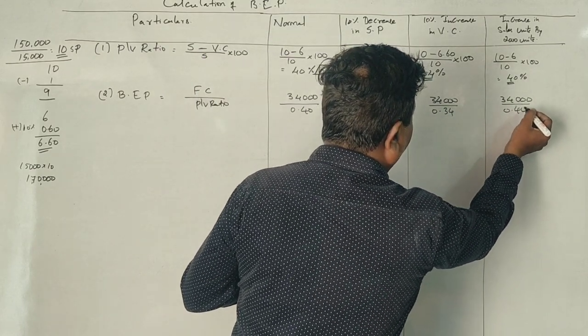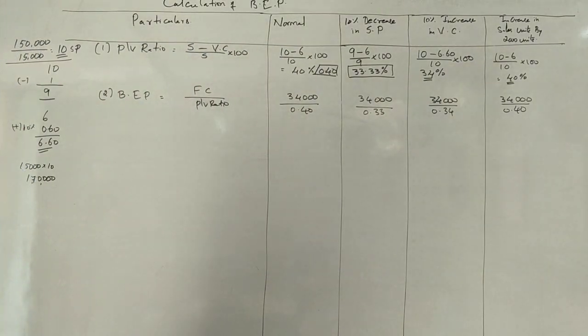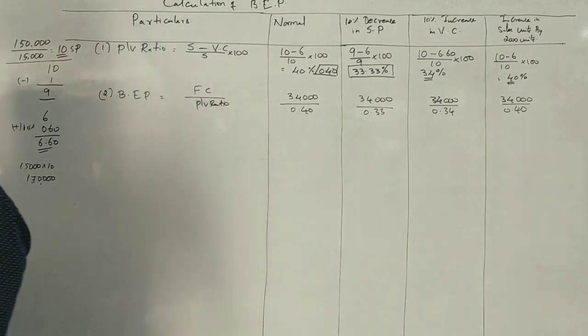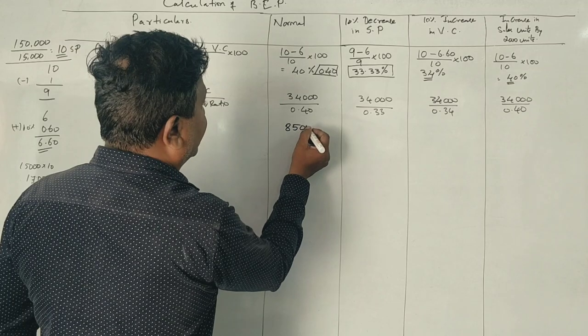For the revised cases, the break-even values are 85,000 for the normal case, and 1,00,000 for another case.